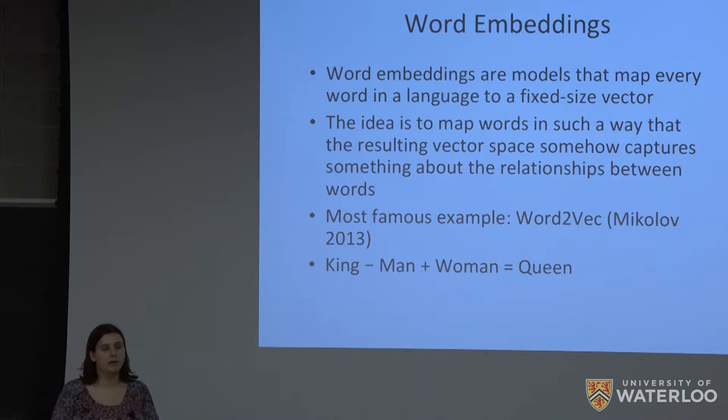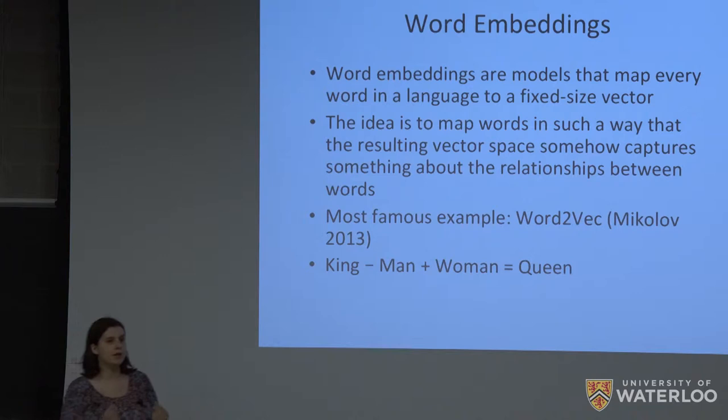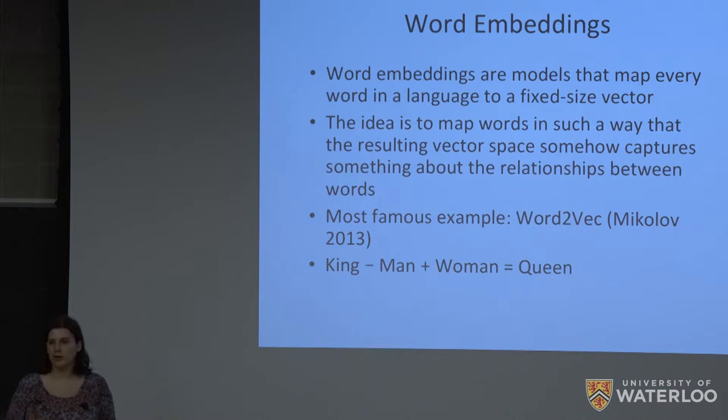This is obviously not optimal. Instead, we try to reduce this space — so rather than 50,000-dimensional, we use maybe 300-dimensional vectors. We learn a 300-dimensional vector to represent every word, in a way such that these vectors capture something about the words: which words occur together, which words occur separately. This gives us a useful framework for thinking about words in models based on language.